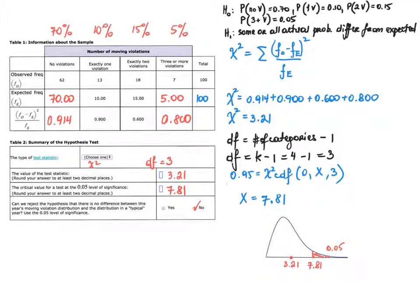For reference, you can sum the total for expected frequencies. When you add all values in the last row, you get 3.214, and this quantity is your test statistic chi-square, which will be used in the hypothesis testing process.